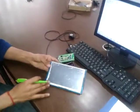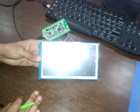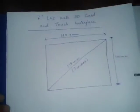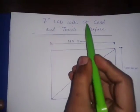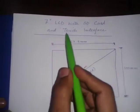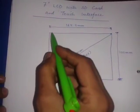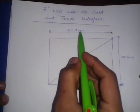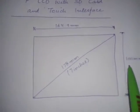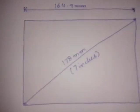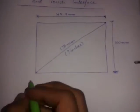This is the LCD which we have to interface with this STM32. It is a 7-inch LCD. Let me tell you some of the dimensions of this LCD. It also has an SD card interfacing with touch interface enabled. The dimension of this LCD is: horizontally it is 164.9 mm, vertically it is 100 mm, and diagonally it is 7-inch, that is 178 mm.